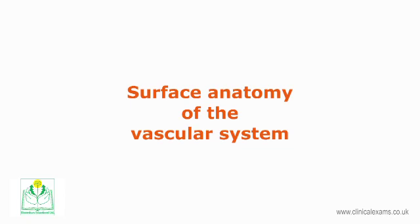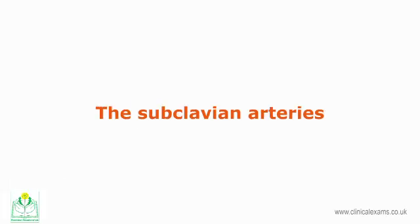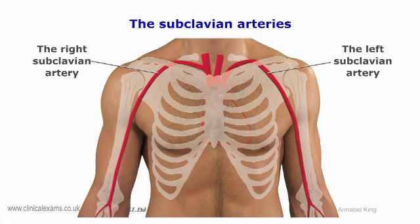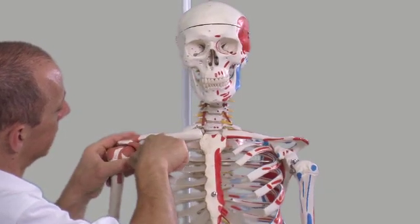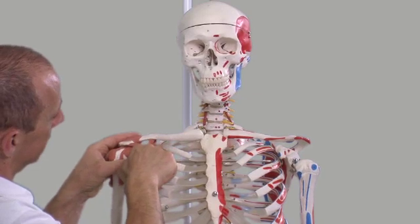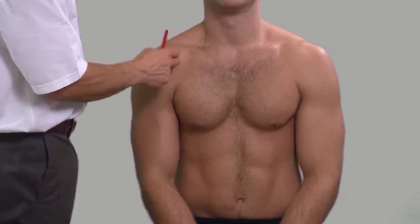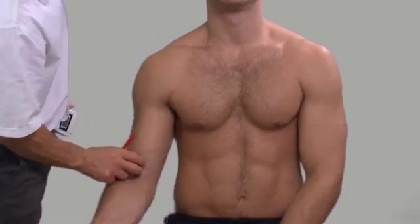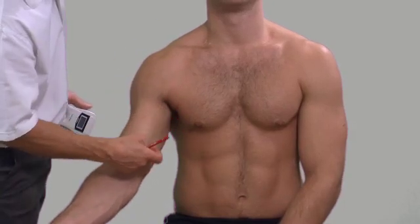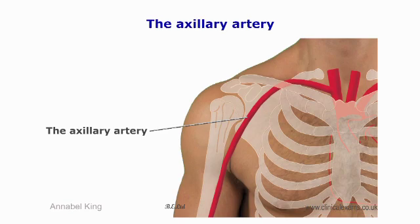Surface anatomy of the vascular system. The subclavian arteries: the right subclavian artery emerges with the right common carotid from the short brachiocephalic trunk. The left subclavian artery starts directly from the arch of the aorta. It may be possible to palpate them as they travel over the first rib, posterior to the clavicle and posterior to the scalenus anterior muscle.